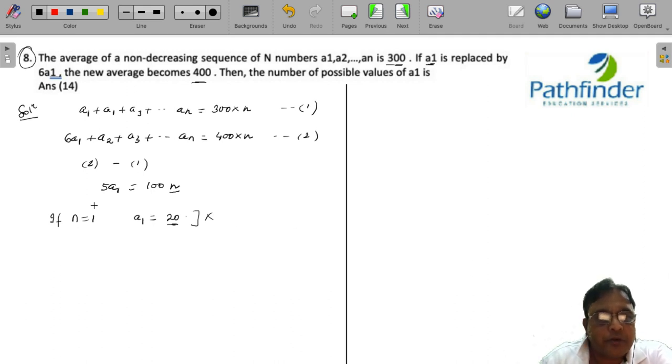How about n equals 2? If n is equal to 2, a1 is equal to 40. So we have two numbers a1 and a2 because n equals 2. If a2 is equal to 560, we can indeed have two numbers whose average is 300: 560 plus 40 divided by 2 will give you 300. So n equals 2 is feasible.